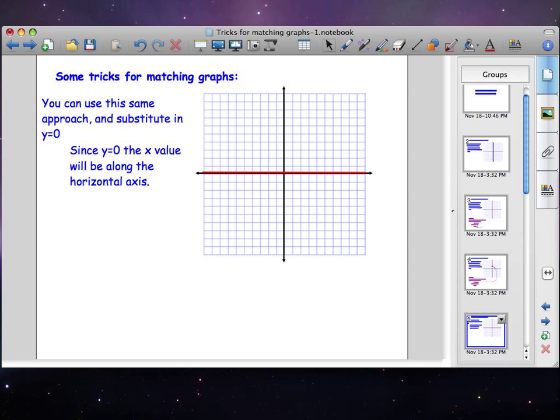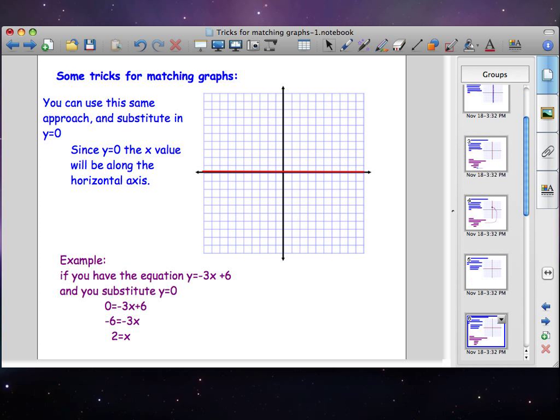In the same way, you can do this substituting zero in for y and know that it's going to be along the horizontal axis. In this example, we have to use a little bit of algebraic manipulation to get the answer for x. But as soon as we do, we see that x is equal to two. Now we count along on our graph on the horizontal axis to two and plot our point right there.